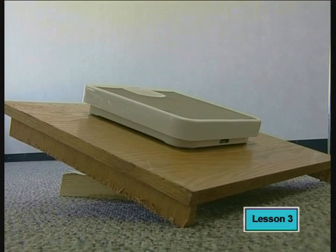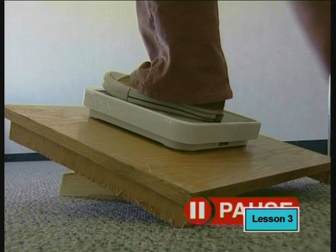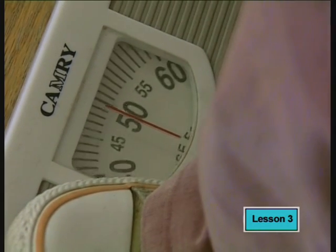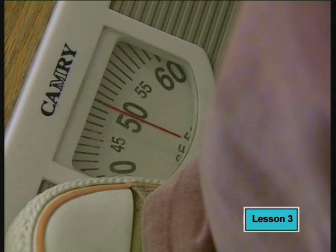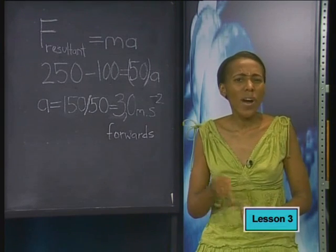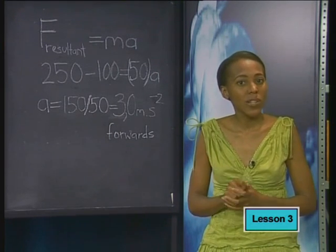Now let's tilt the scale — we will put it on an inclined plane, that is on a slope. Should the scale read the same force when it is on a slope? Interestingly, she seems to have lost some mass: the scale now reads her mass as 50 kilograms. We know that things cannot just lose mass, so why has the normal force reduced when the scale is on a slope? We can work it out by drawing a free body diagram.